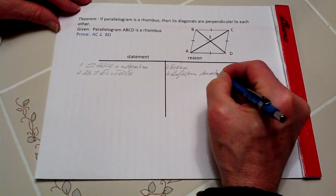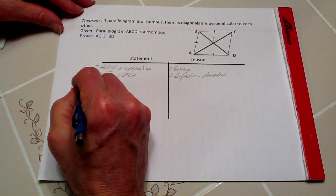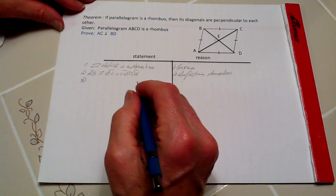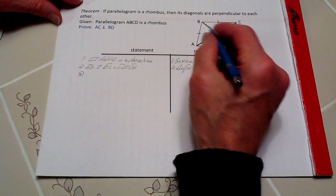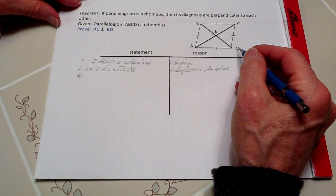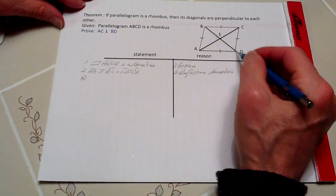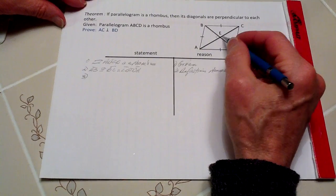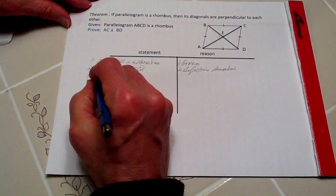We know that all four sides are equal in length. Number three, we also know, since this is a parallelogram, which was already part of our given, that these segments right here bisect each other.